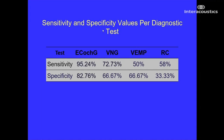We also compared sensitivity and specificity to other tests used for hydrops, including videonystagmography, vestibular evoked myogenic potentials, and rotary chair sinusoidal harmonic acceleration test. ECOG showed greater sensitivity and specificity than any of these tests. Electrocochleography, if recorded and interpreted correctly, can be a highly sensitive and specific test for endolymphatic hydrops.